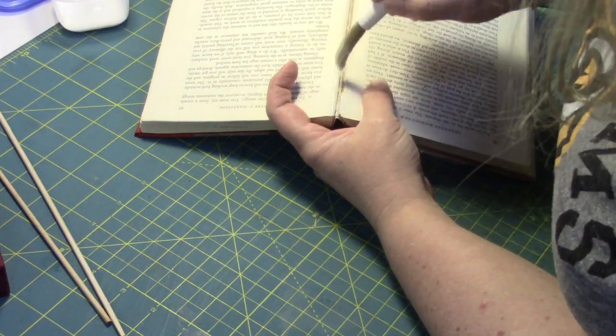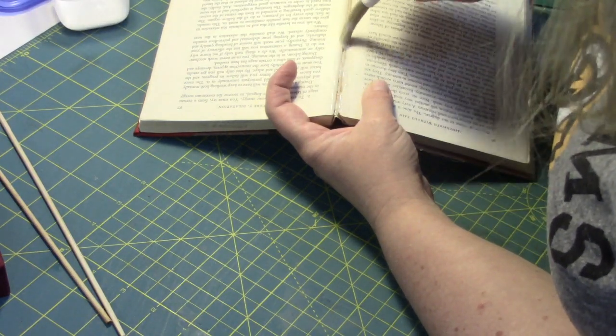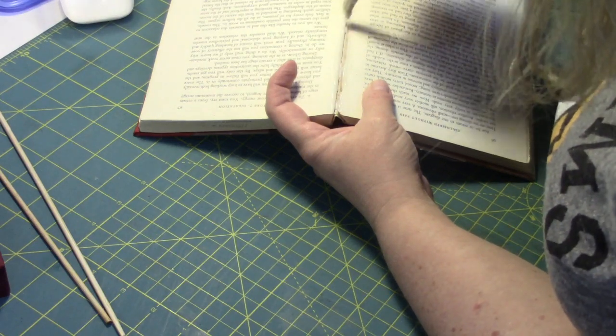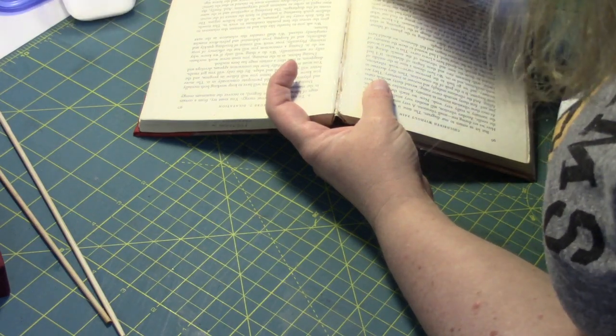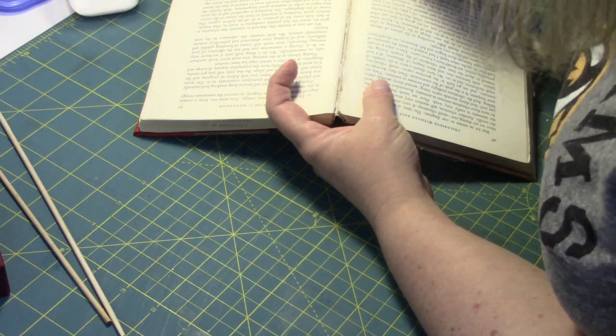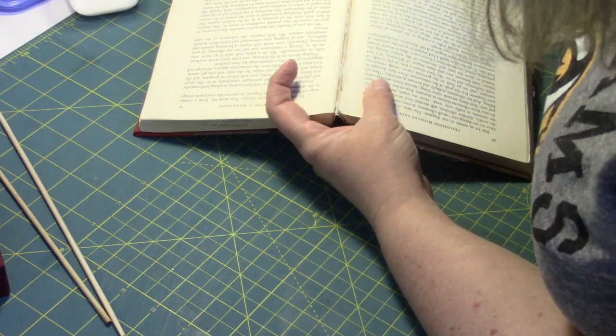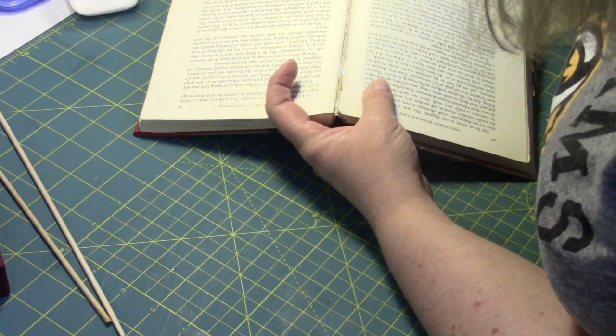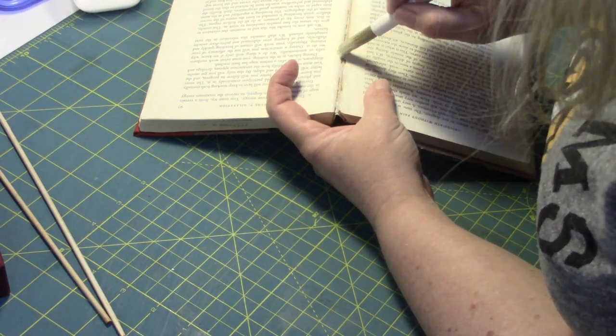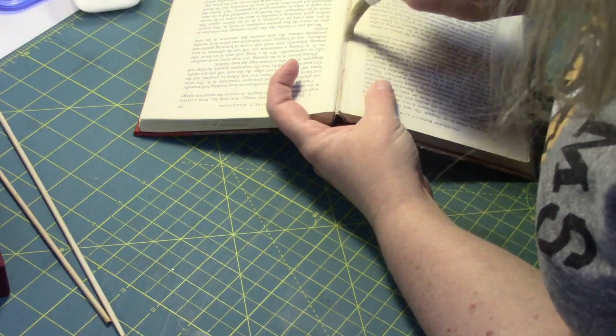You don't want to get tons of glue, but you do want to have enough glue down in there that it's going to hold the book. So you're going to just run a line of adhesive down the center, and make sure you're getting on the back of each of the sections, down in that spine.